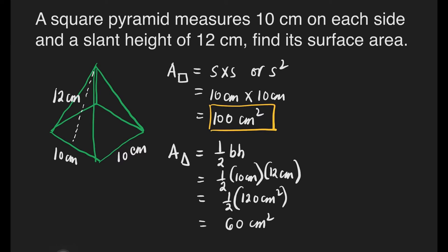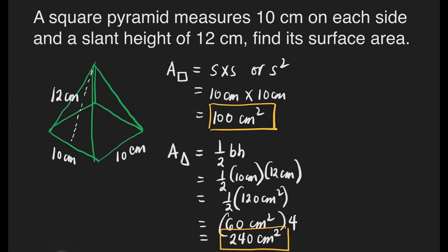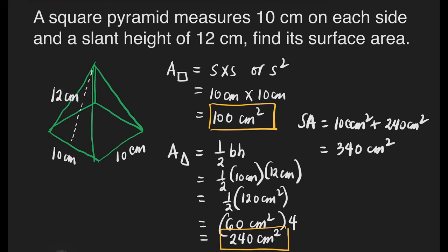This is only for one triangular face. Since we have 4 faces, we multiply 60 cm squared by 4, which gives us 240 square centimeters for the area of all four triangular faces. We're now ready to solve for the total surface area: 100 cm squared plus 240 square centimeters gives us a total surface area of 340 square centimeters.